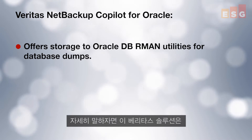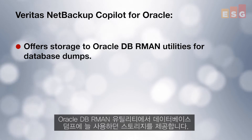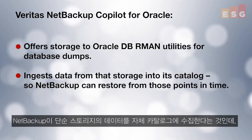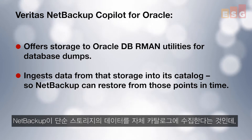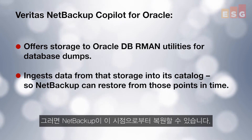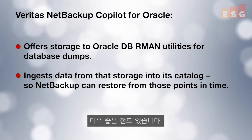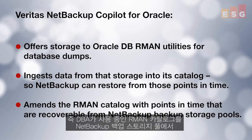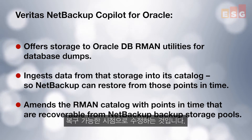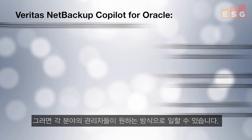Specifically, the Veritas solution offers up storage for the Oracle RMAN utilities for them to use for their database dumps, just like they always have. But then — and this is really cool — NetBackup ingests the data from that simple storage into its catalog so that NetBackup can restore from those points over time. And then Veritas does the reverse: it amends the RMAN catalog that the DBA is using with the points in time that are recoverable from the NetBackup backup storage pool.